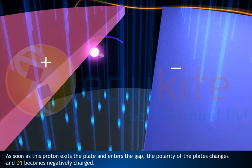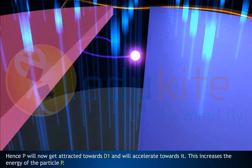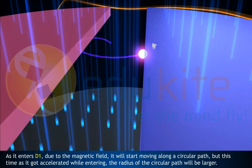the polarity of the plates changes and D1 becomes negatively charged. Hence, P will now get attracted towards D1 and will accelerate towards it. This increases the energy of the particle P. As it enters D1 due to the magnetic field, it will start moving along a circular path.